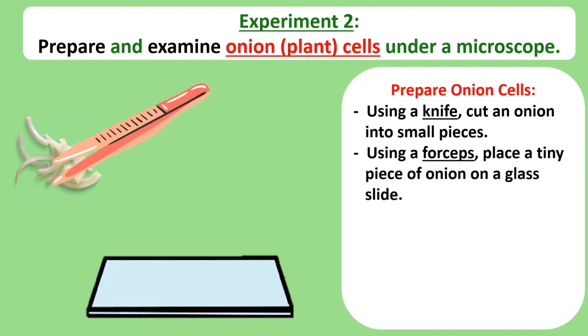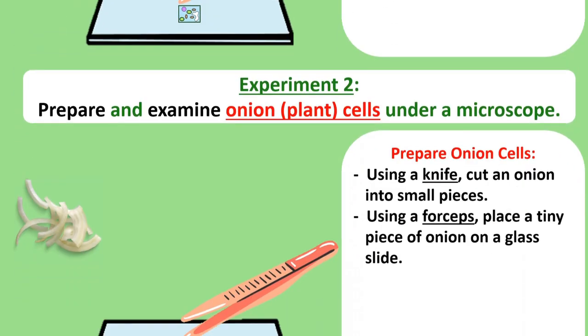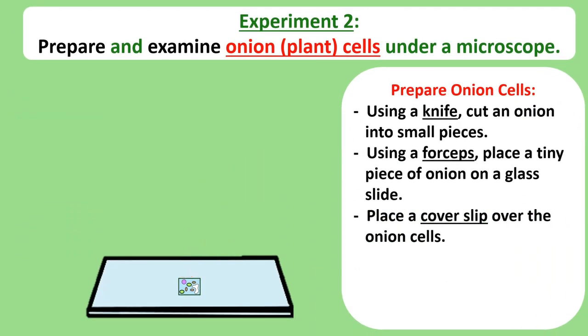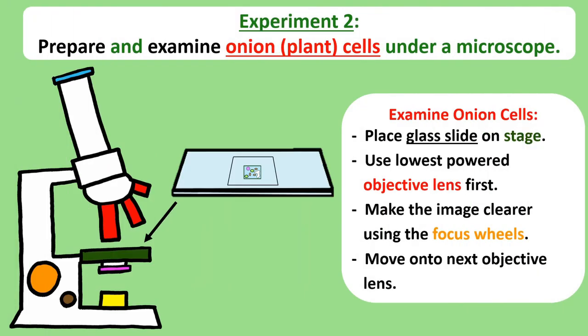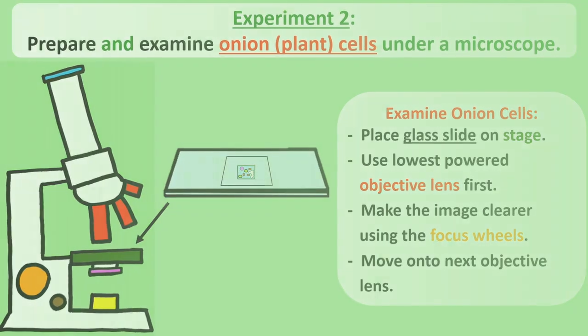Using a forceps, place a paper thin piece of onion tissue onto the glass slide. Once again, cover the onion cells with a cover slip. And instead of methylene blue, we add iodine to plant cells so that they appear more clearly under the microscope. Examine the cells the exact same way that we examined the animal cells. Just make sure that you use the lowest power objective lens before moving your way up to the higher powered lens.